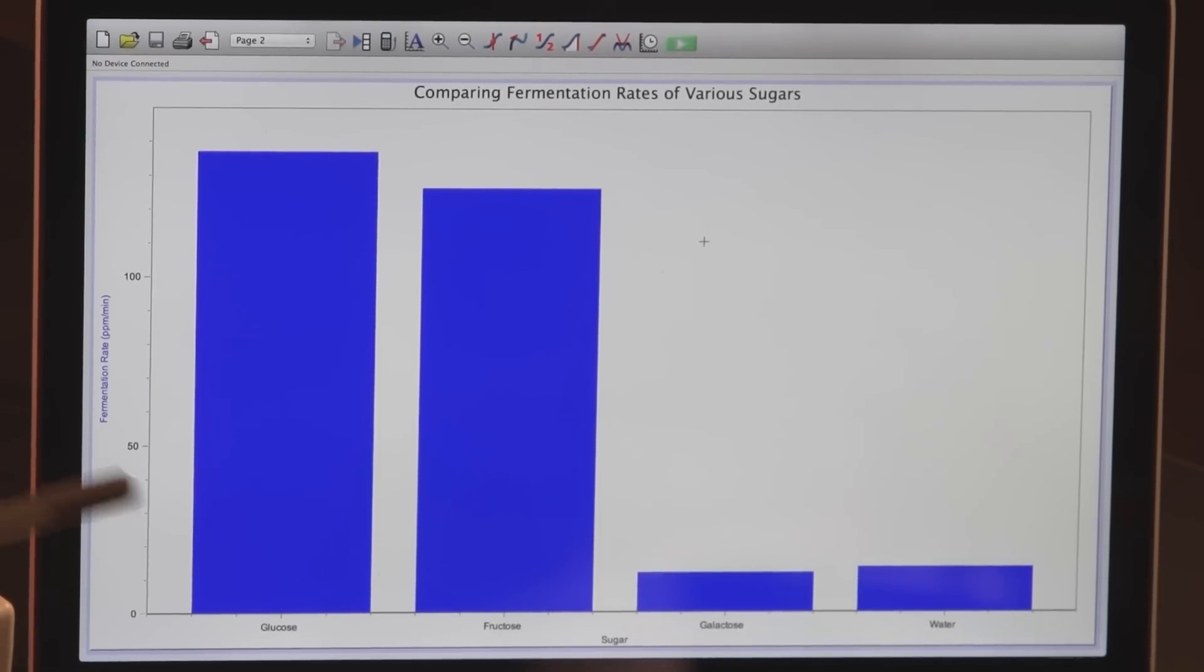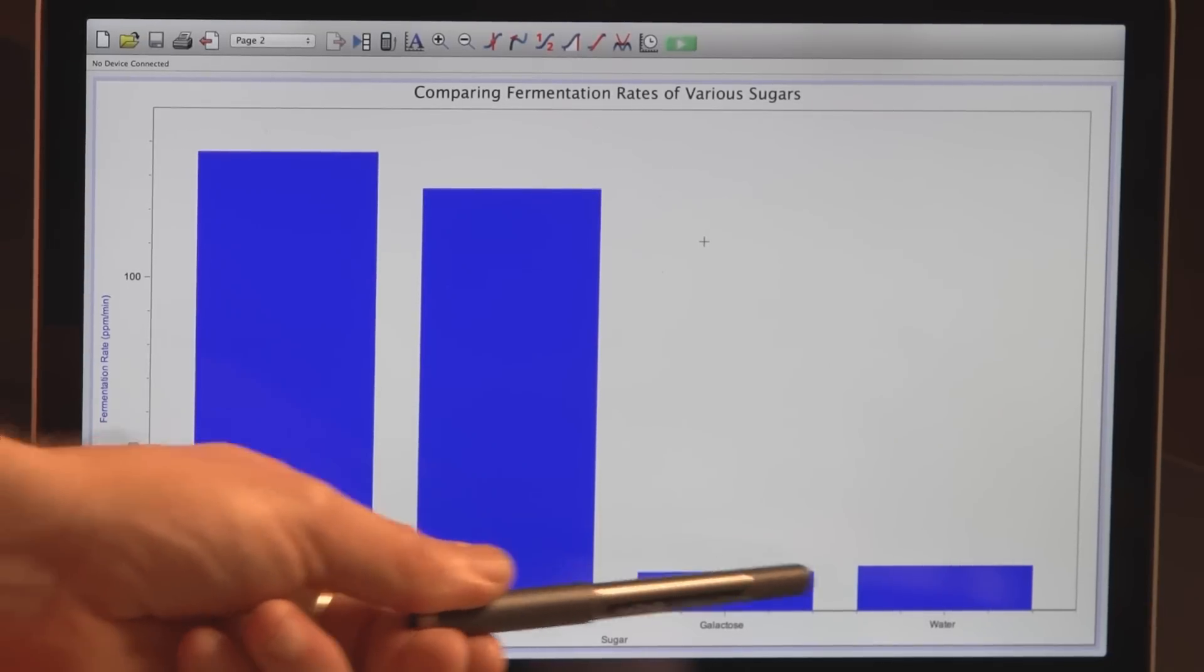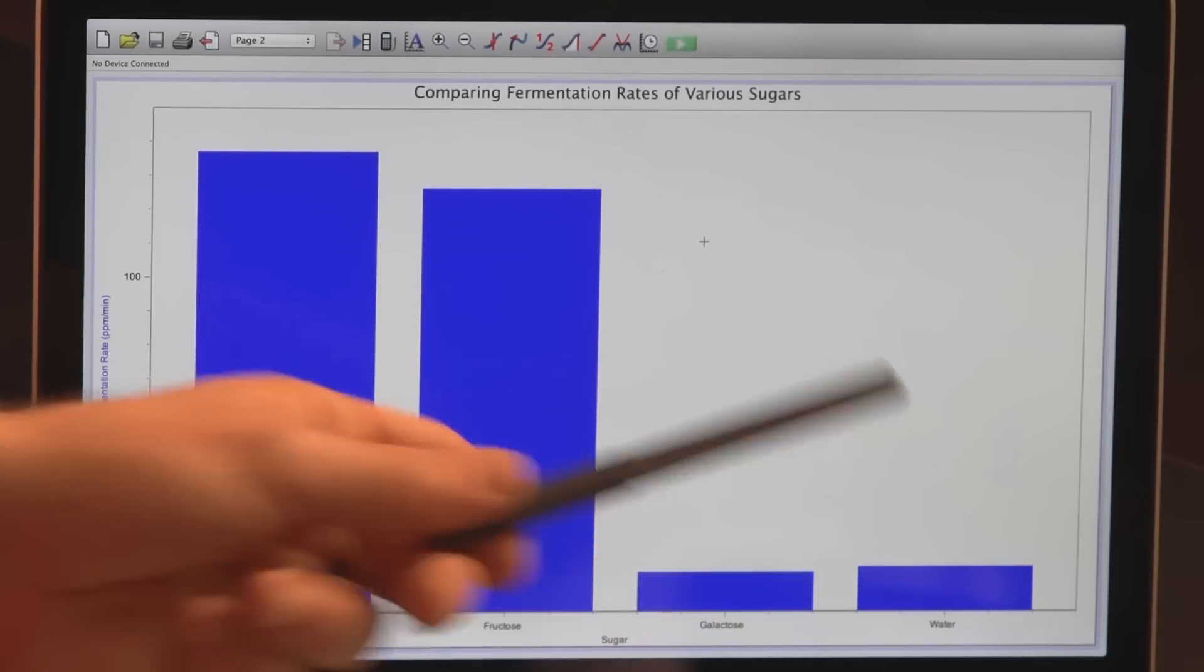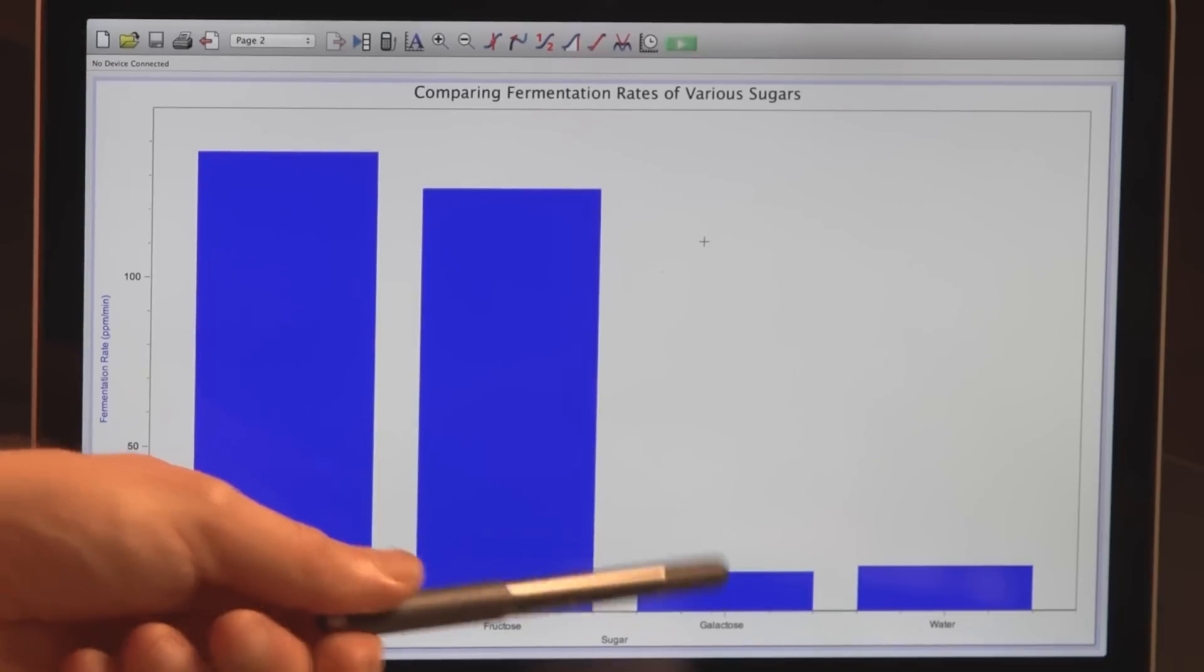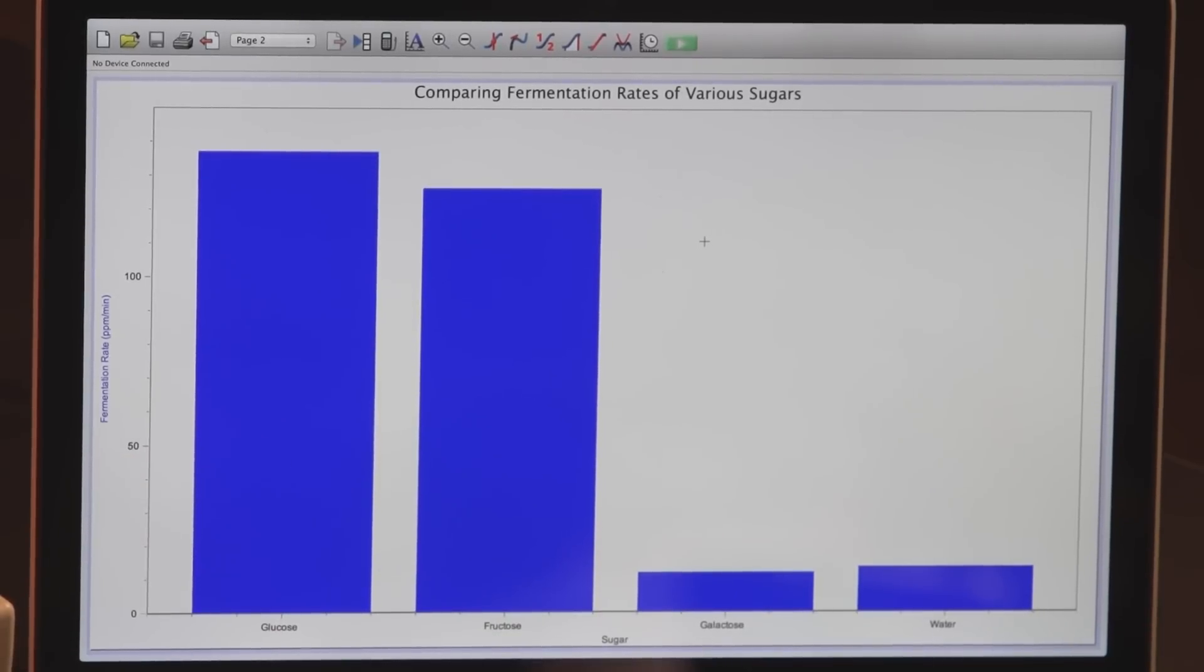What's really interesting is you can see galactose right here. The yeast, for all intents and purposes, couldn't even metabolize it. The fermentation rate is exactly the same. Actually, water is even a little bit higher. So we could conclude from looking at this data that the yeast in this case can metabolize glucose and fructose, and at least in this case cannot really metabolize galactose. And those are three different monosaccharides.